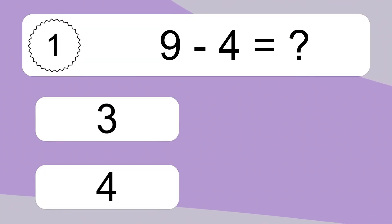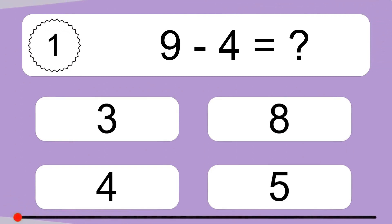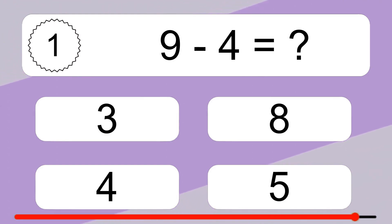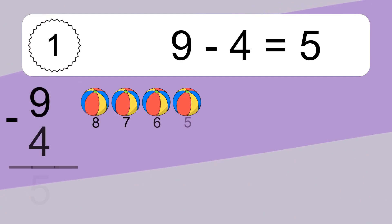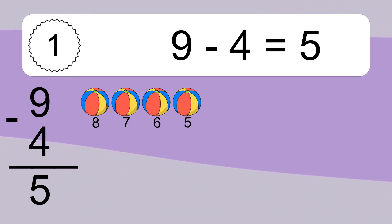9 minus 4 equals what? 9 minus 4 equals 5. Let's count it: 8, 7, 6, 5.